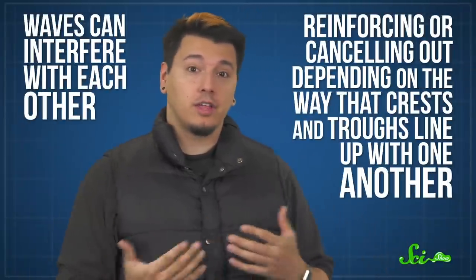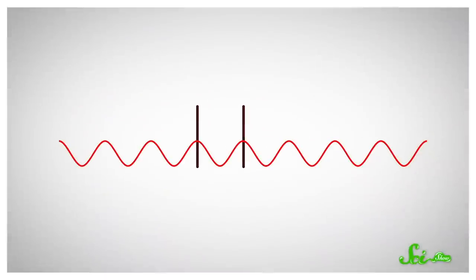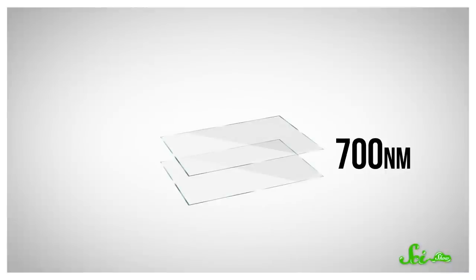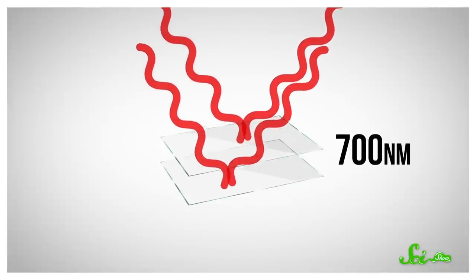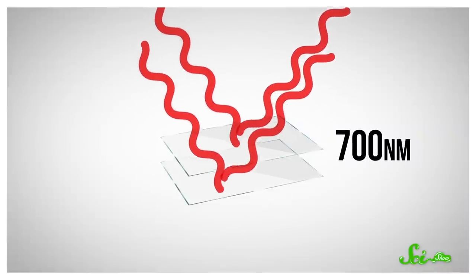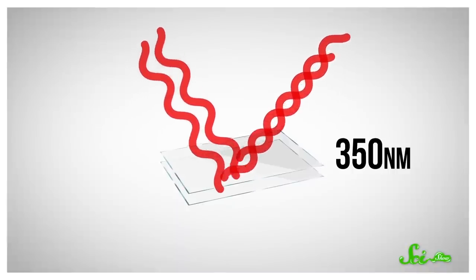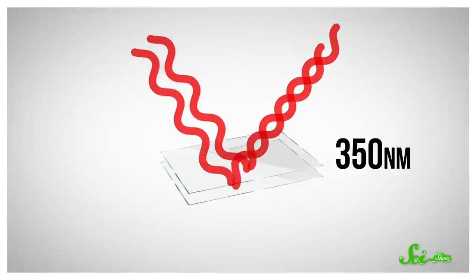Waves can interfere with each other, reinforcing or canceling out depending on the way that the crests and troughs line up with one another, and that interference can alter what color is perceived. For example, red light's wavelength is about 700 nanometers. So if you had two semi-reflective layers — like layers of glass — separated by about 700 nanometers, the crests of the red light reflected by one would overlap with the crests reflected by the other, making the thing seem tinted red. But if the layers were separated by about 350 nanometers instead, the crests reflected by one would overlap with the troughs reflected by the other — no red light would come out at all, even though both layers are reflecting red. And the same goes for individual atoms doing the reflecting instead of layers of glass. So that's structural color.